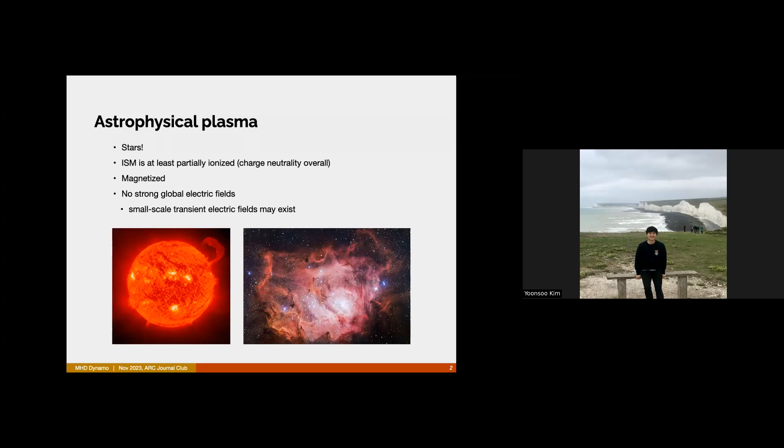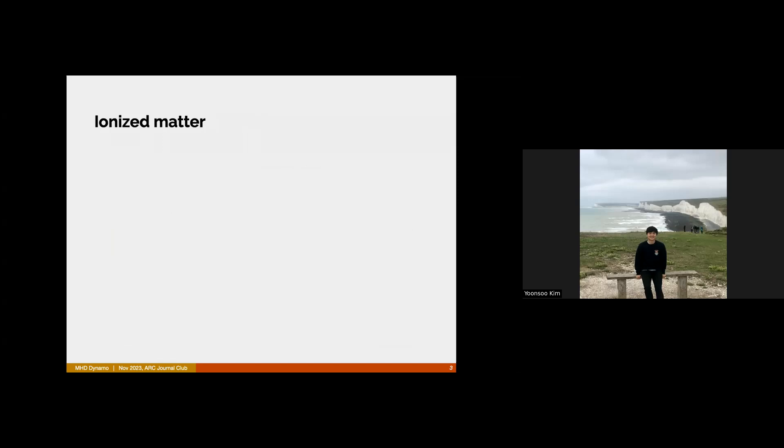One characteristic of these objects in terms of electromagnetic fields is that because the electric force is usually very strong at small scales, it typically gets neutralized very quickly. So there's no very strong global electric field. There can be some short-scale, short-lived transient electric fields, but overall, looking at these celestial objects at a big picture level, they're usually charge-neutral and the electric field is almost zero compared to the magnetic field they have.